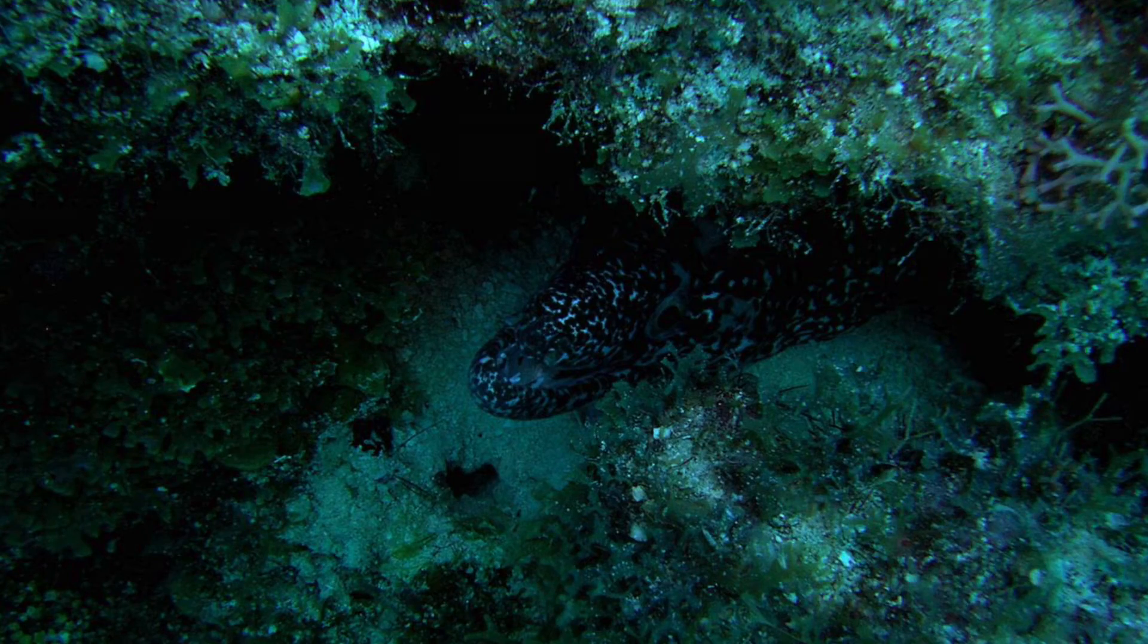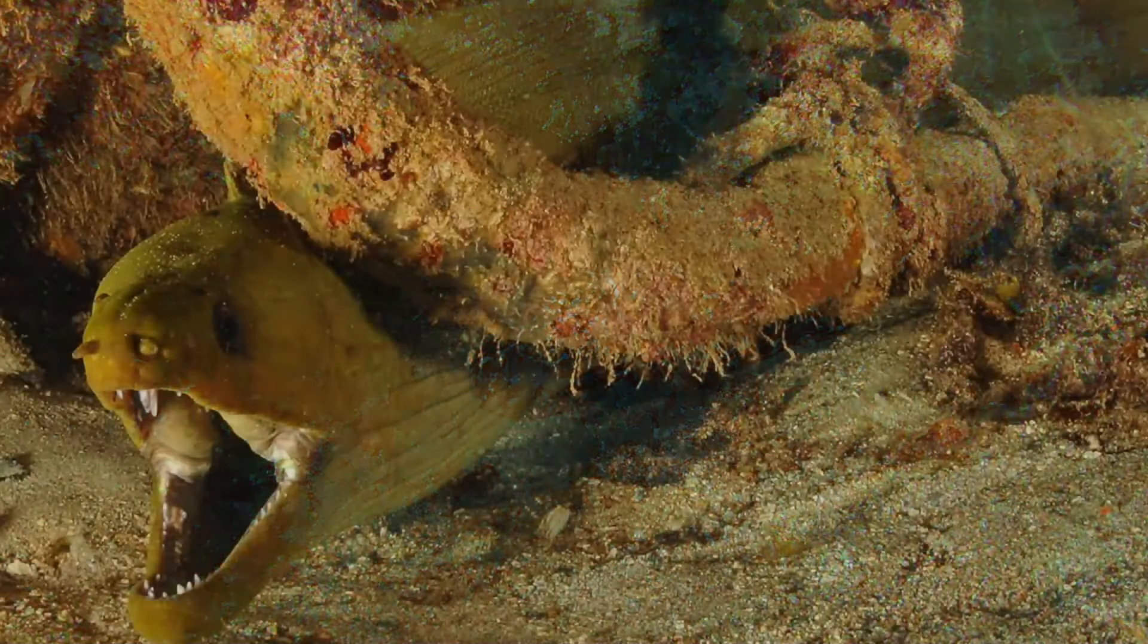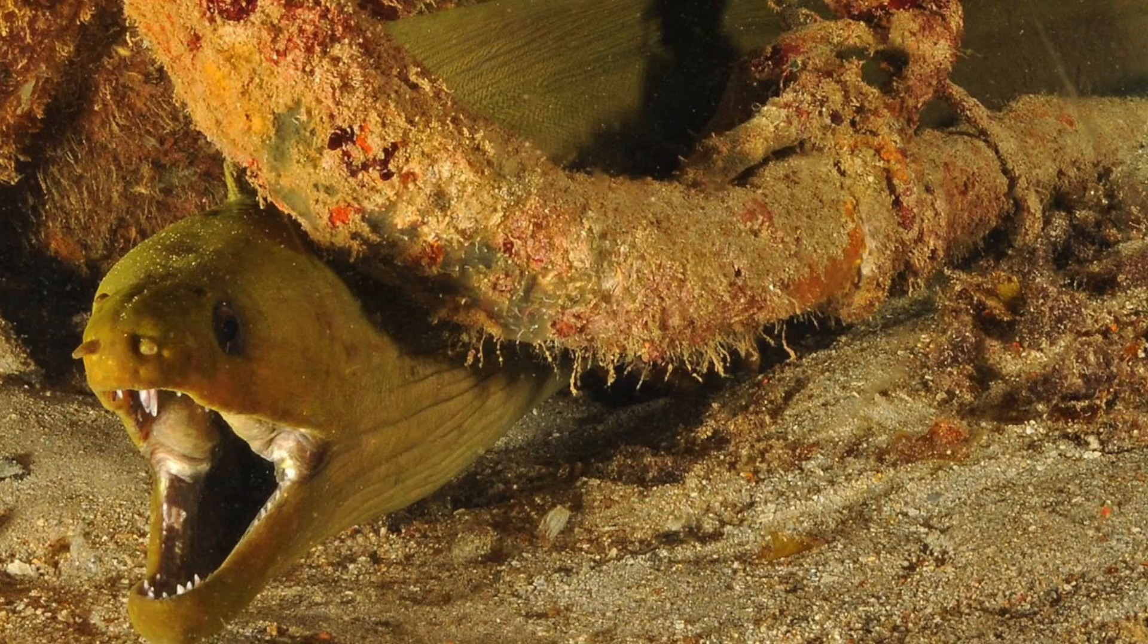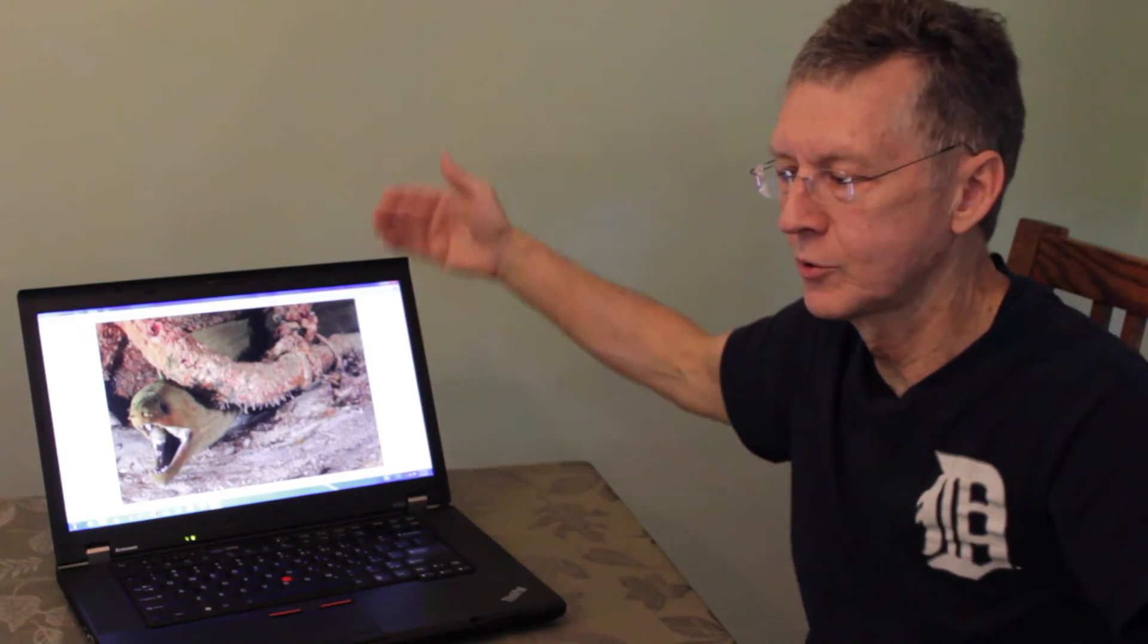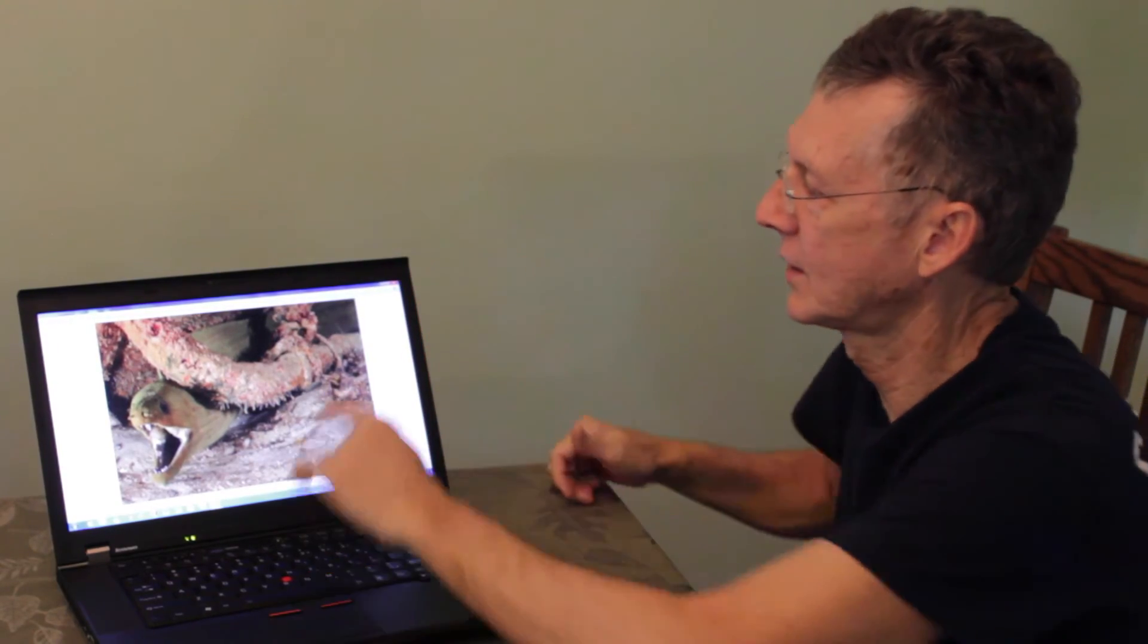This was a big green moray eel under a ledge and a wreck, and my first few shots I thought I was getting good images. I took, checked the histogram, everything was dark. I was eliminating the top part of the ledge. I put both strobes at an acute angle and shot, got it in, and I was able to get a good picture of that eel in a pretty narrow place.